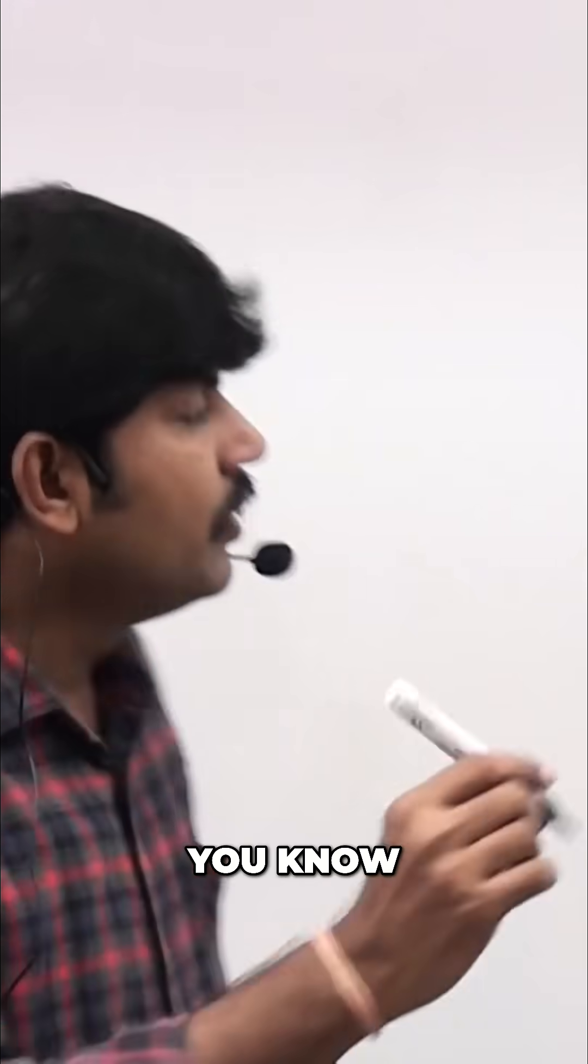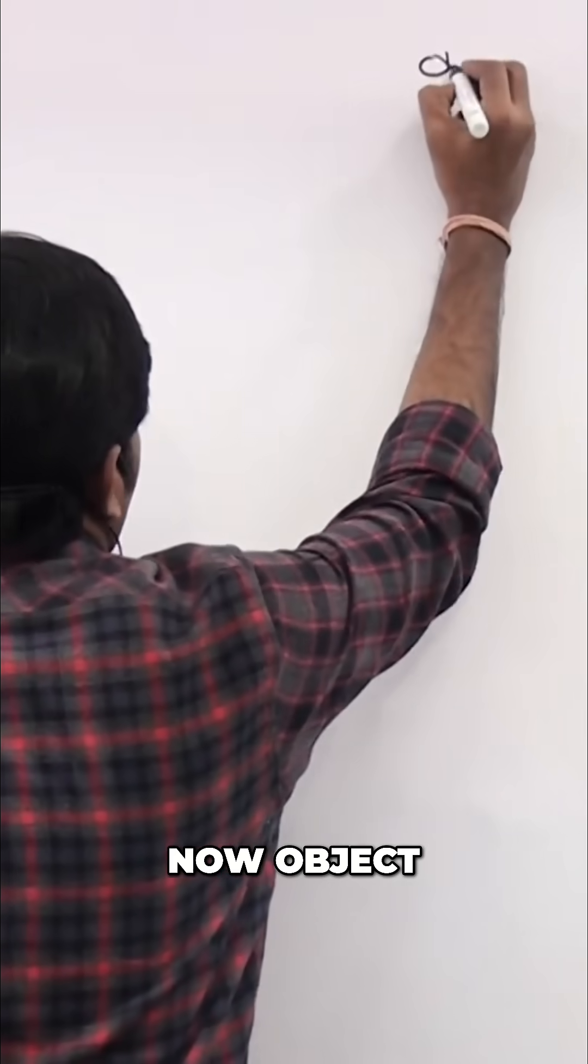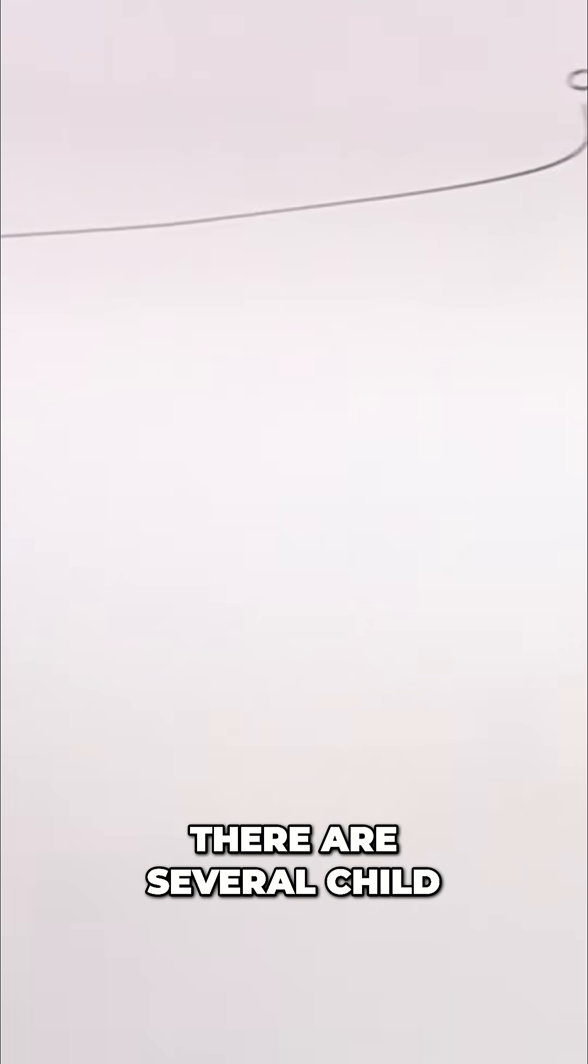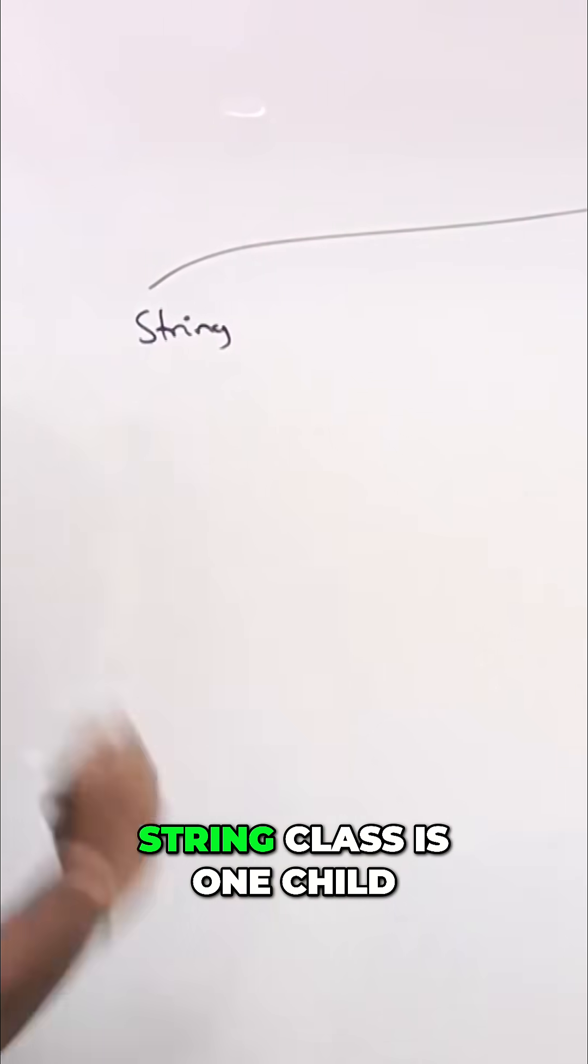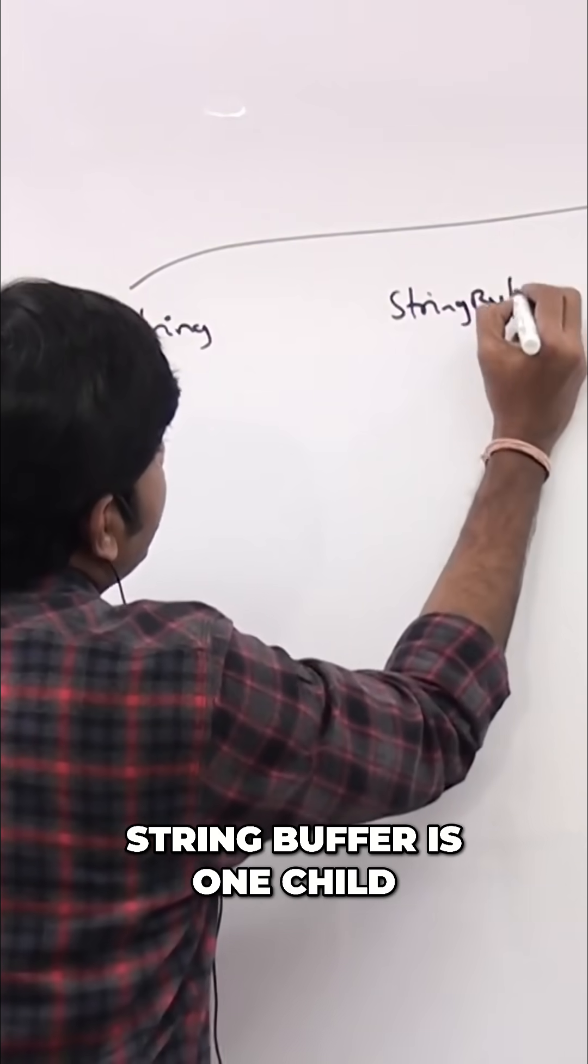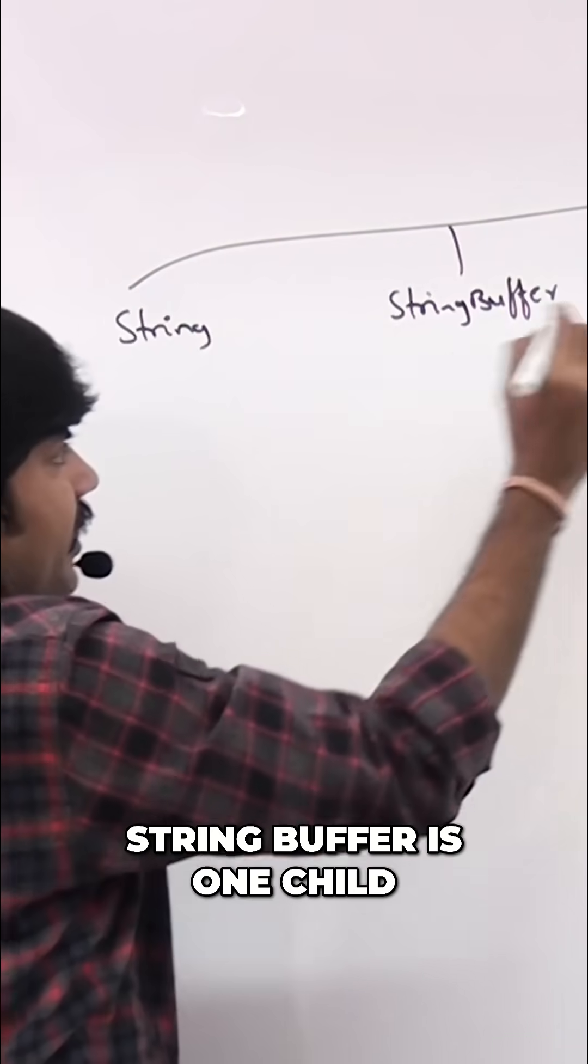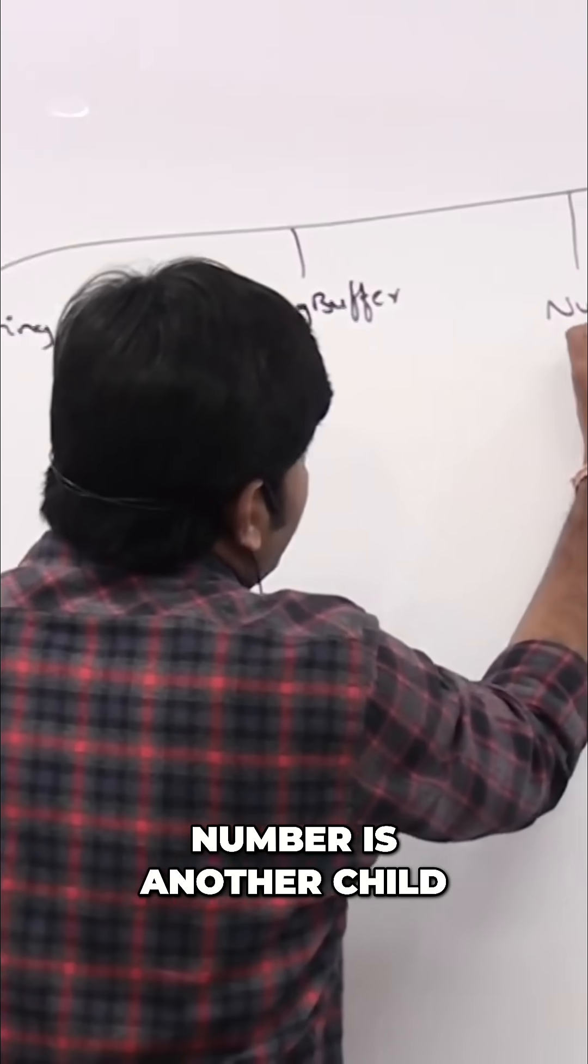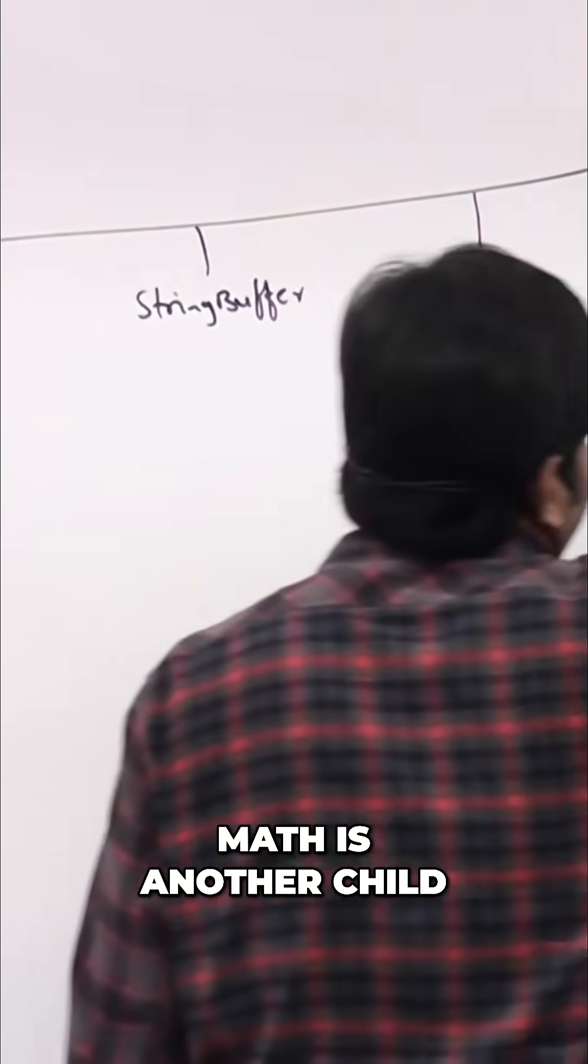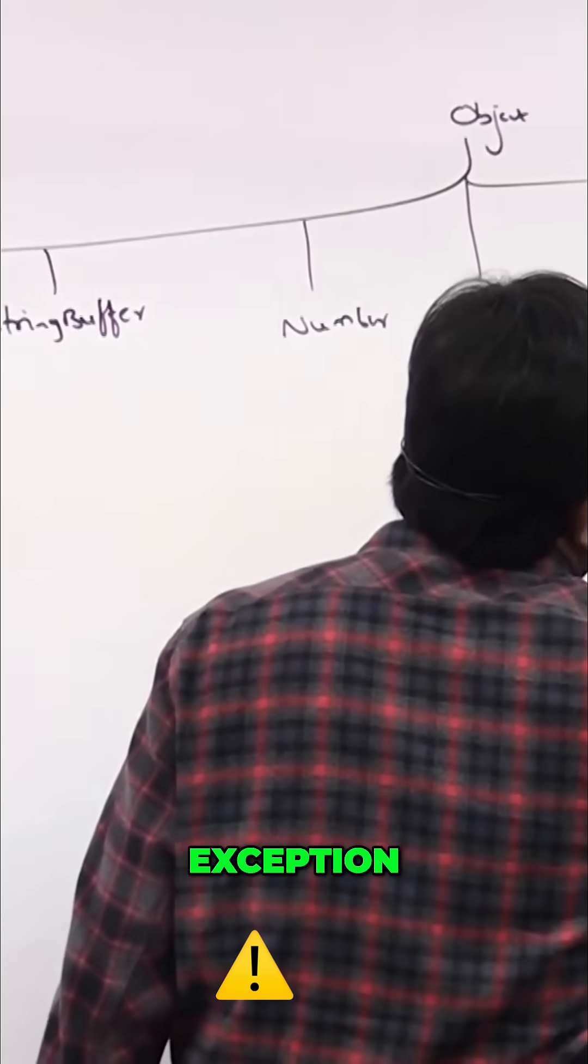Object class, you know sir. Now object, for the object there are several children classes are there, sir. String class is one child, next StringBuffer is one child.